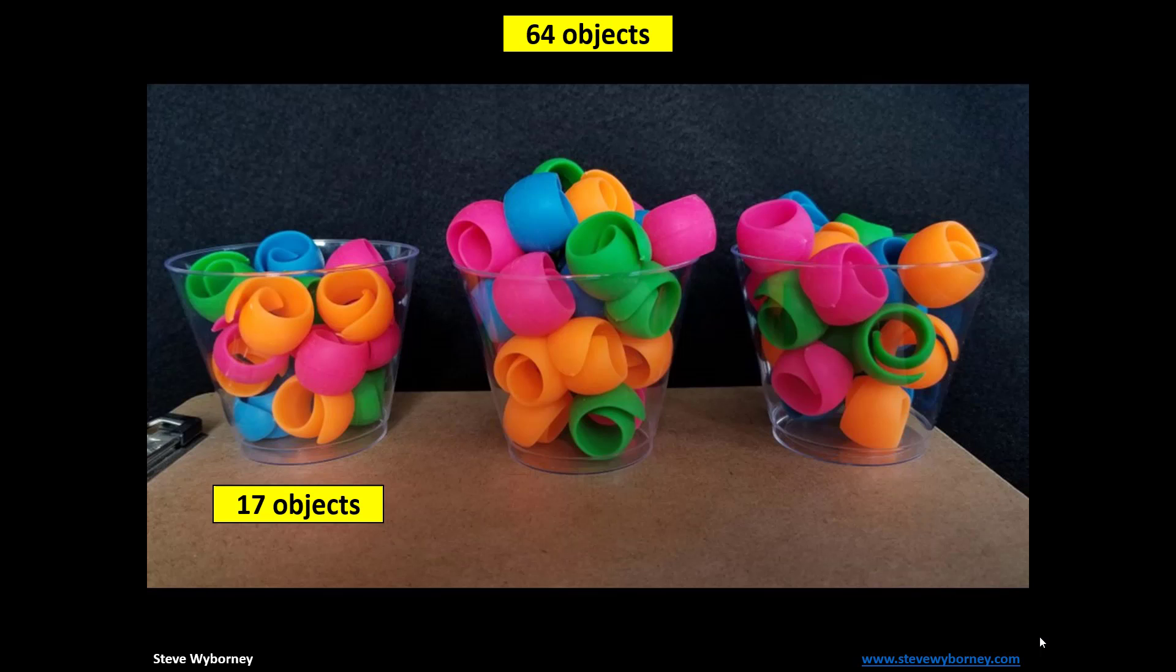There's a lot to be learned from all the information on the screen, and there's also a lot of context to work with now. For example, the first container has a little less than the last container, so the third container must have a little more than 17, and we can also think about the number 64.